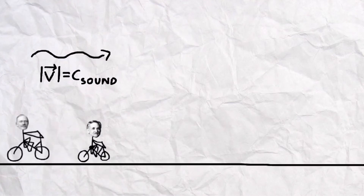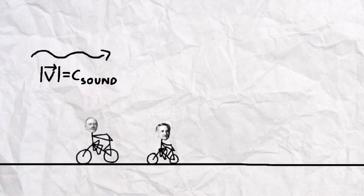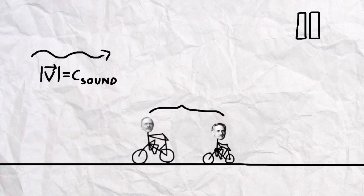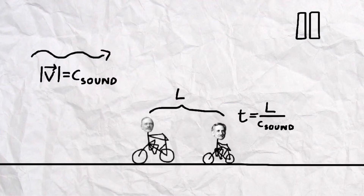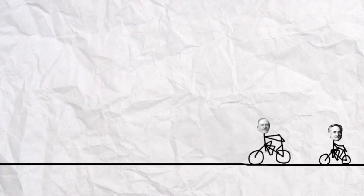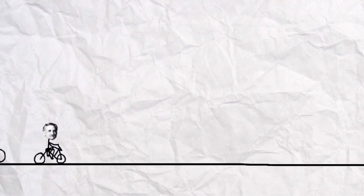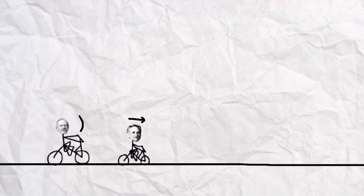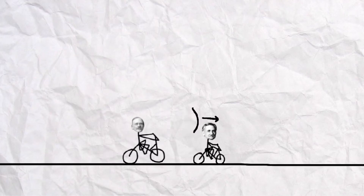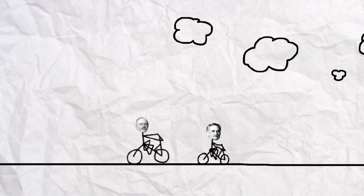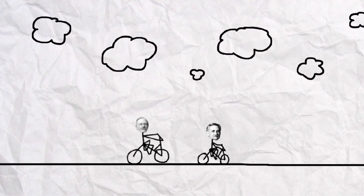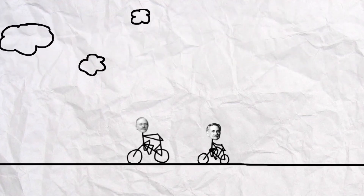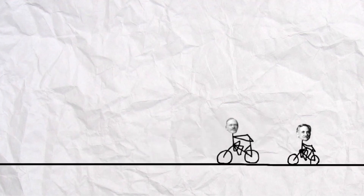Sound moves at a speed C_sound relative to the air. If both of them were at rest relative to the reference frame of the air, the sound wave would take a time T = L / C_sound to travel the distance L. However, since they are really in motion, and Michelson is moving away from Morley's sound waves, the sound takes an extra time increment to reach Michelson. This shows that when the two are in motion in the same direction, the time taken is slightly longer than if they were stationary relative to the medium.